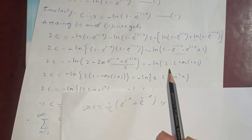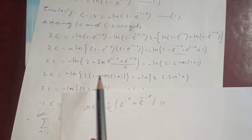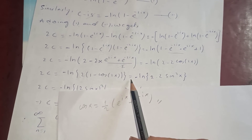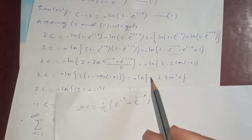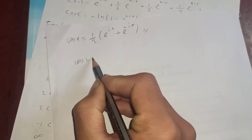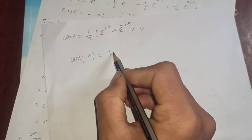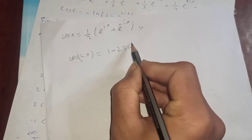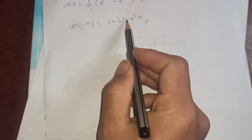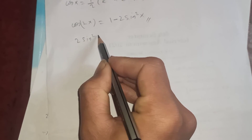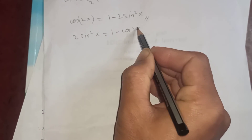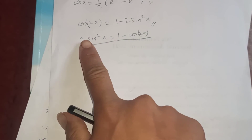So 2C equals minus log(2(1 - cos(2x))). Now from the double-angle formula, cos(2x) = 1 - 2sin²(x), so 1 - cos(2x) = 2sin²(x). Substituting this: 2C equals minus log(2 · 2sin²(x)), which is minus log(4sin²(x)).